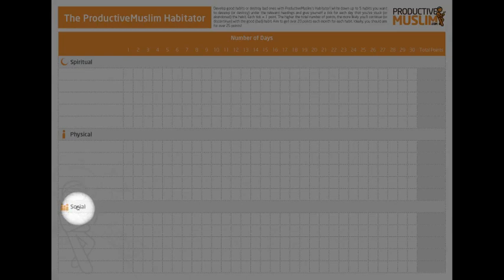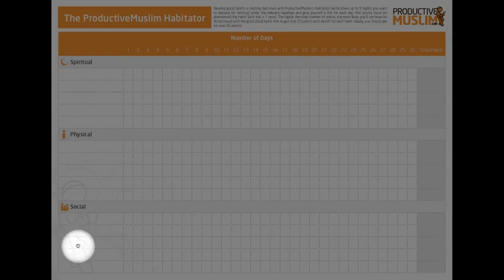The third type of habits are social habits. For example, contacting your parents and your relatives and people whom you know, contributing towards the local masjid and the local volunteer group, making sure that you are visiting the sick or asking about people — things which will help you become more socially productive.